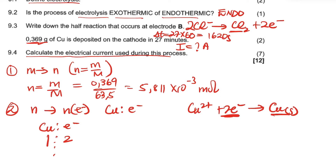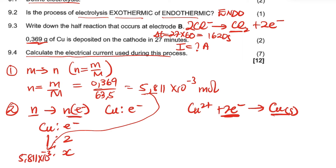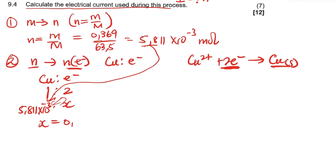Using the 2:1 ratio and cross-multiplying: moles of electrons = 2 × 5.811 × 10⁻³ = 0.01162 mol of electrons. This is the number of moles of electrons transferred.